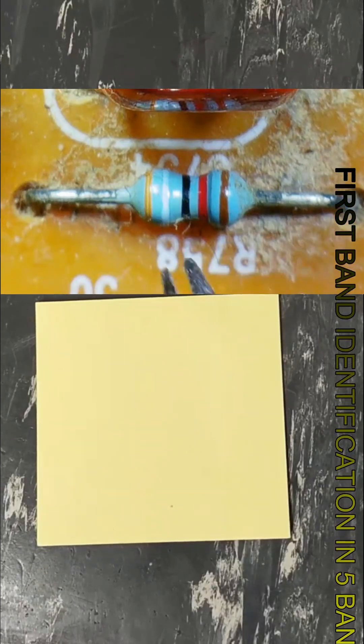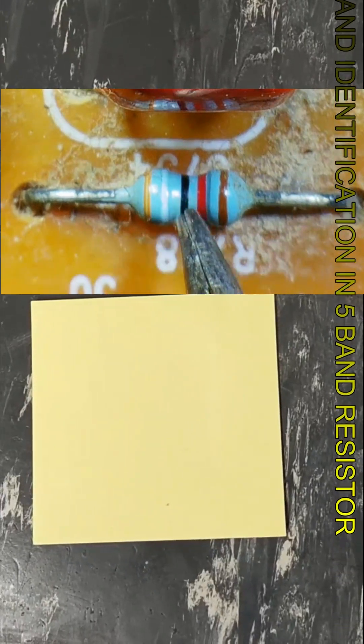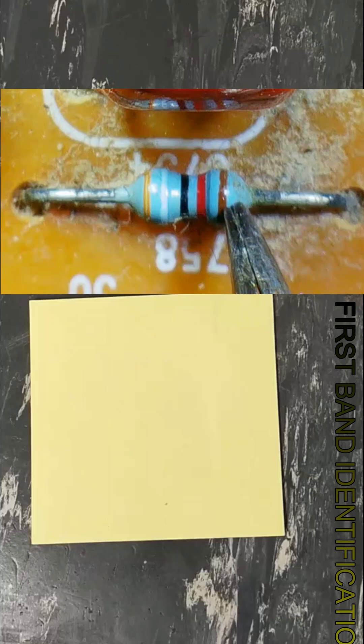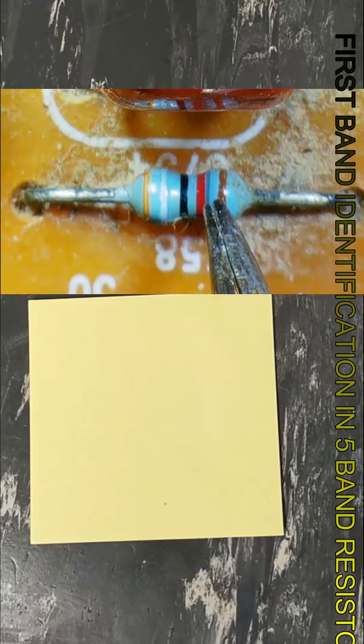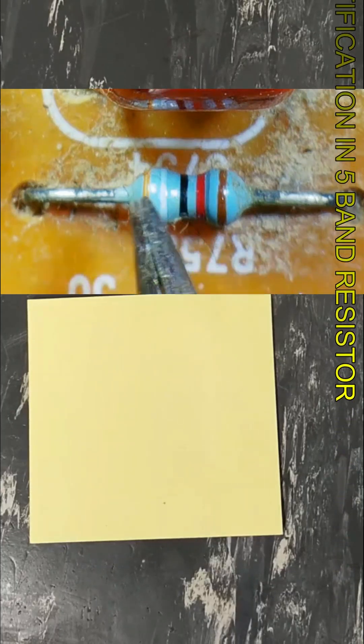This is a five band resistor. Orange, white, black, red, brown. And if we check from this side: brown, red, black, white, orange.